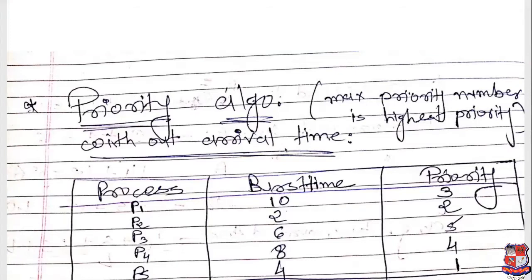Today I am going to teach the priority scheduling algorithm. There are two main parts of the priority algorithm: the max priority algorithm and the min priority algorithm. The max priority algorithm is further divided into two parts — preemptive priority algorithm and non-preemptive priority algorithm. Similarly, the min priority algorithm is also divided into preemptive and non-preemptive parts.